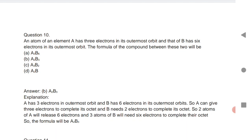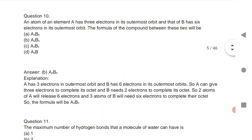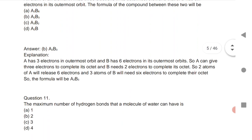An atom of element A has three electrons in the outermost orbit and that of B has six electrons in the outermost orbit. The formula of the compound between these two will be A2B3. A can give three electrons to complete its octet, and B needs two electrons to complete its octet. So two atoms of A will release six electrons, and three atoms of B will need six electrons to complete their octet.